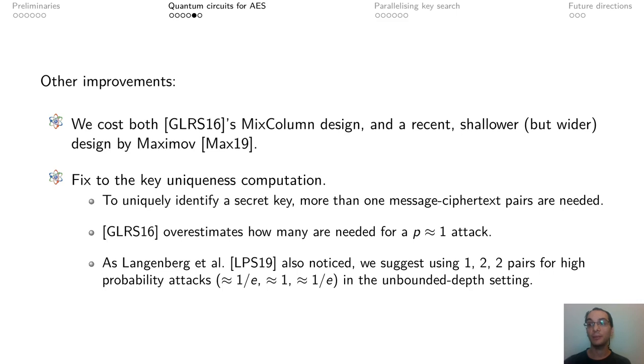We also look at mixed column, and instead of doing a PLU decomposition as Grassl et al. do, we chose a recent design by Maximoff that results in a shallower but wider design. Finally, we also fix a mistake that Grassl et al. make in computing the amount of plaintext ciphertext pairs required to uniquely determine an AES key. We also consider unbounded lower probability attacks by using less pairs.